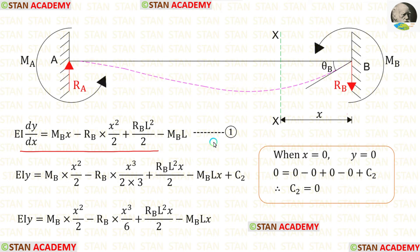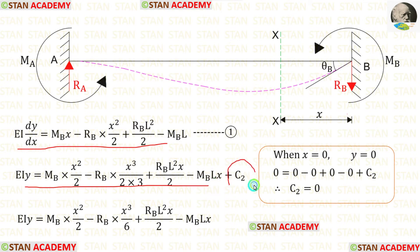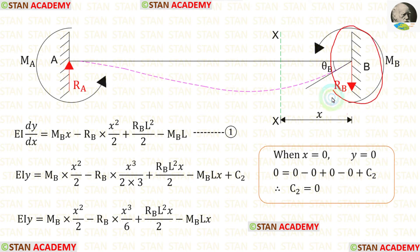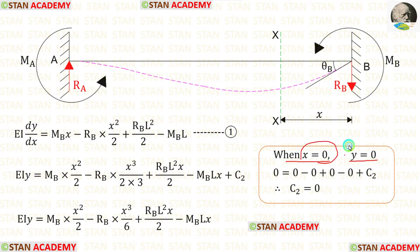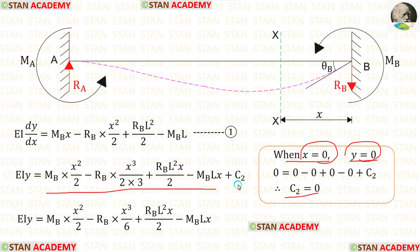Let us label the slope equation as number 1. Now let us integrate this equation again. When we integrate, we get the deflection equation with C2 as the constant. At point B there will be no deflection because there is a vertical support. So when X = 0, Y = 0. Applying these values, we obtain C2, and substituting C2 back gives the deflection equation.